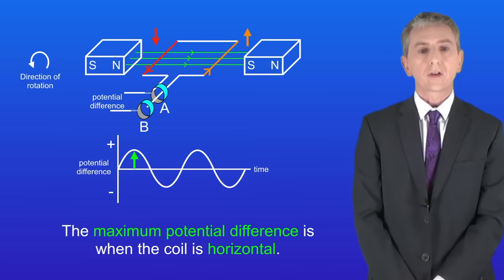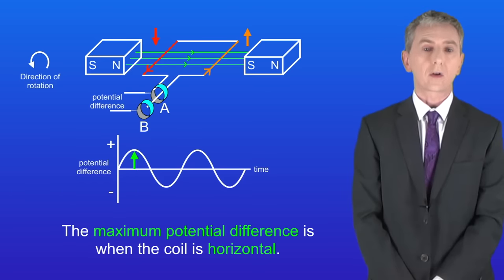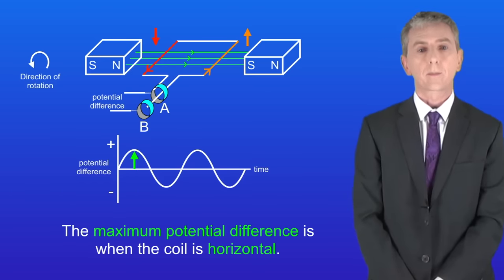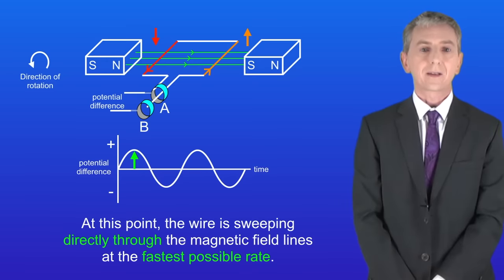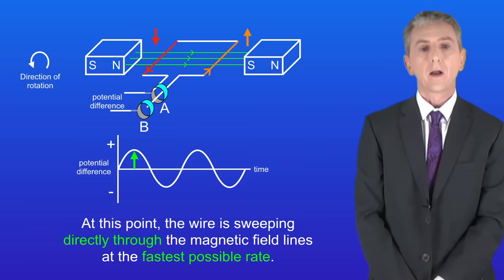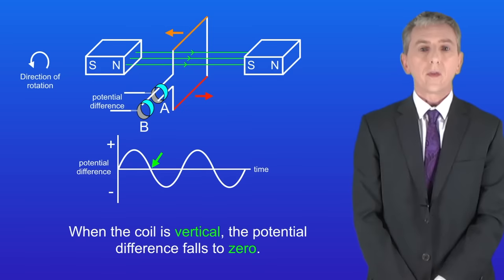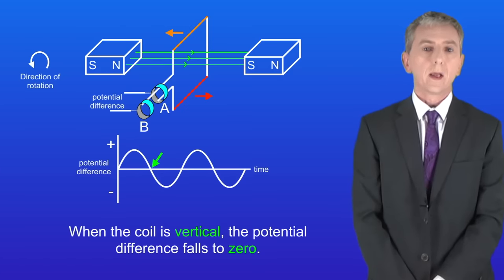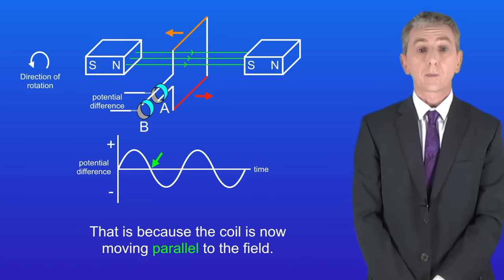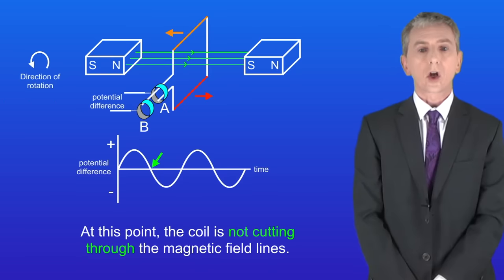The maximum potential difference is when the coil is horizontal. At this point the wire is sweeping directly through the magnetic field lines at the fastest possible rate — the red side is moving downwards and the orange side is moving upwards. When the coil is vertical, the potential difference falls to zero, because the coil is now moving parallel to the field — it is not cutting through the magnetic field lines.